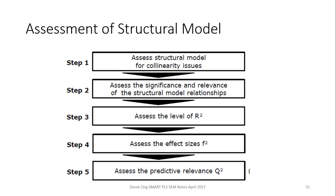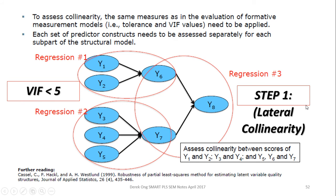There are five steps in the assessment of the structural model. First, you need to look at the collinearity issues. In the measurement model we looked at vertical collinearity, but now in the structural model we have to look at lateral collinearity, which is basically the evaluation of the formative measurement models. In the measurement model, arrows pointing out were considered reflective, but now we look at the inner VIF to assess lateral collinearity.